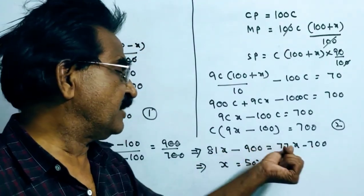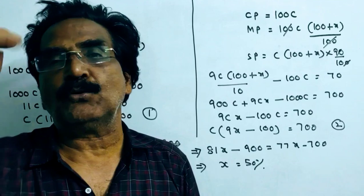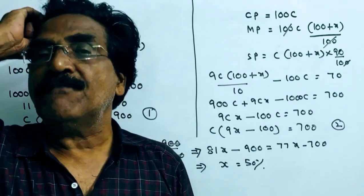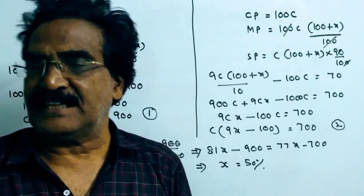4x is equal to 200, x is equal to 50. So 50 percent is your answer. Thank you.